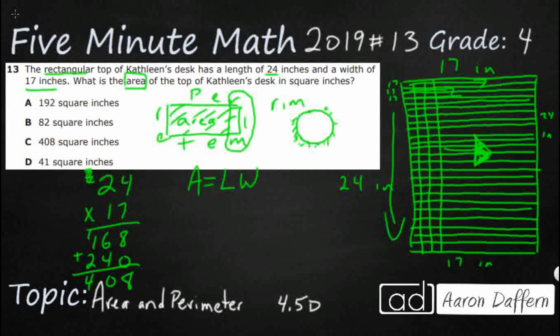Now remember, this is going to be square inches, so you're going to see it like square inches like this, or you can see 408 inches with a little 2. That also means square inches. But either way, your answer here is C.